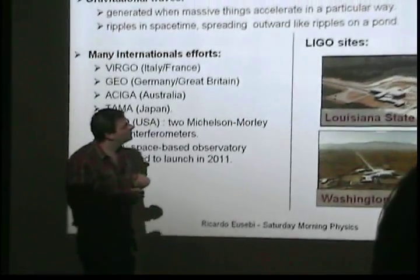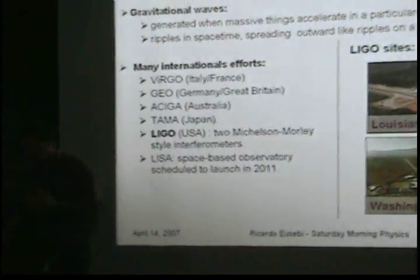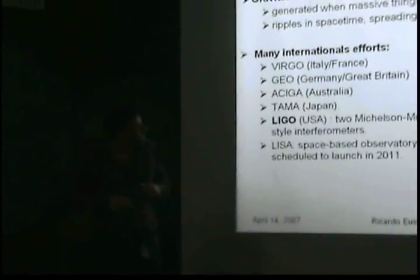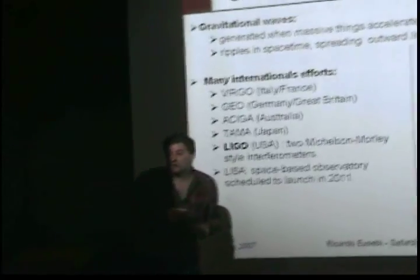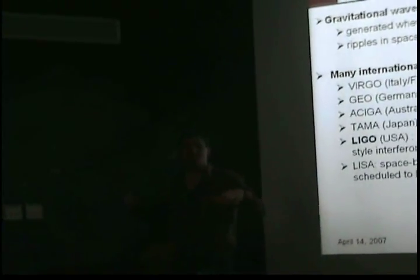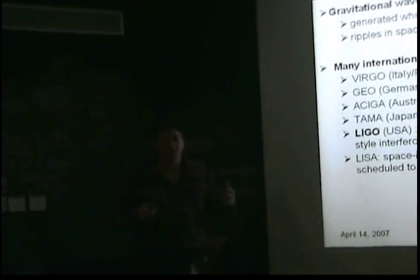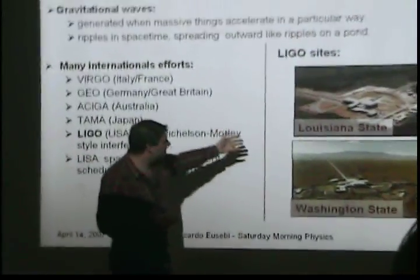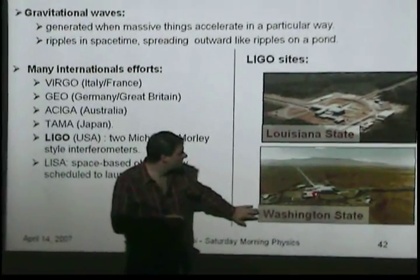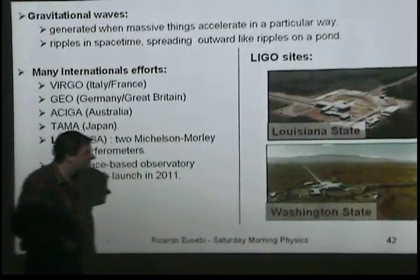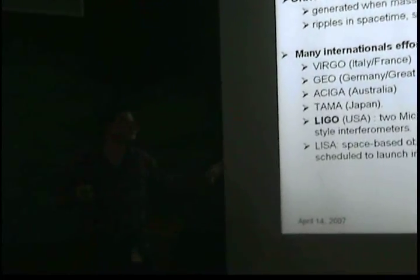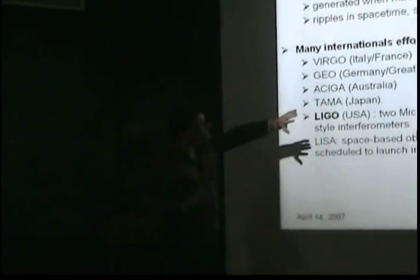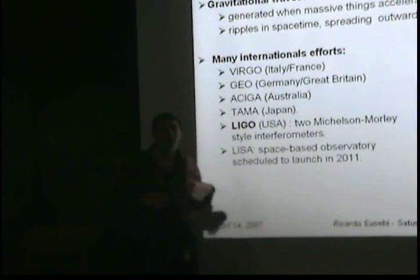They had some problems originally when they started. One site is close to a forest, and there were machines chopping down trees, producing noise. So they had to refurbish many components to reduce that noise. And to make sure they're measuring what they expect, they have a second detector in Washington State. Now they are using the information from both detectors together to try to draw conclusions about gravitational waves.